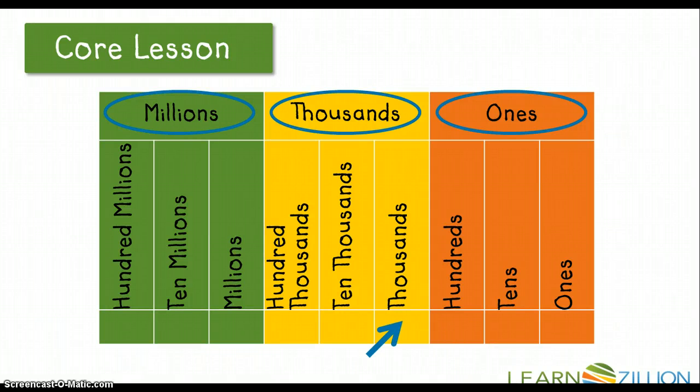And then we look at the thousands period. We have the thousands, which is our unit. See right here? That's our unit. And then we have the ten thousands and hundred thousands. Then when we jump to the millions period, we have our millions, which is our unit, because that's what period we're in. And then we have ten millions and hundred millions.